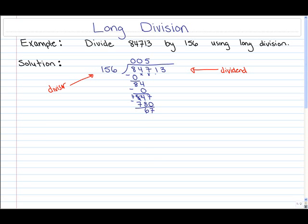I'm now ready to bring down the next number in the dividend which is the 1. Now how many times can 156 evenly go into 671? Well that can go in 4 times evenly so I'm going to put a 4 up above the 1.